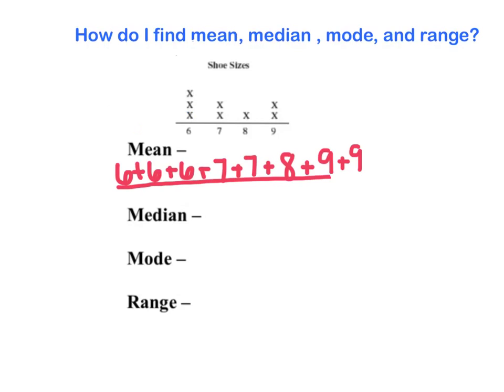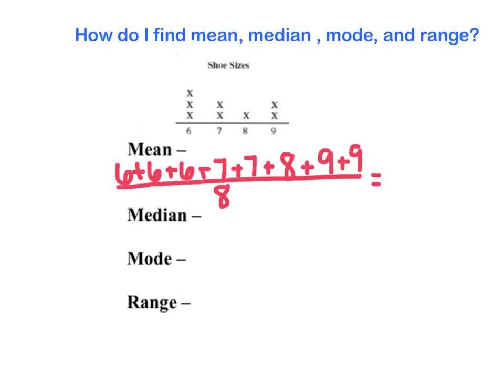And because I have a total of eight shoes, I'm going to divide by eight. So I'll add up all these numbers and I'm going to get a total of 58, then all over 8. I'm going to divide 58 by 8, and I'm going to get a shoe size average of 7.25.